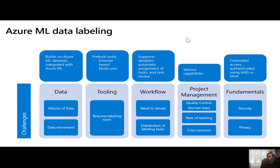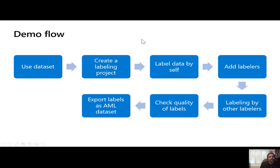The labelers are authenticated using AAD or MSA. Here is our demo flow: we will use a dataset based on images kept in Blobstore, then create a labeling project as a data scientist, label a few images ourselves, sign back into the project management portal to check the quality of the labels, and finally export the labels as a dataset.